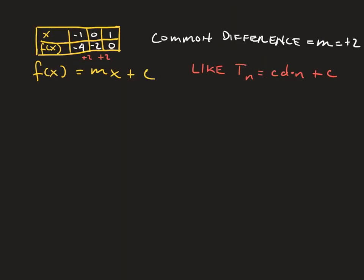So to recap on a page with a bit more space, we have a table of inputs and outputs. Because we're using functions, we're going to use a rule f of x equals mx plus c, which is very similar to what we did in the previous chapter where we used tn. And we noticed before on the previous page that the common difference is 2. But now instead of calling it cd for common difference, we're now going to call it m. It's just a naming thing that you have to get used to.